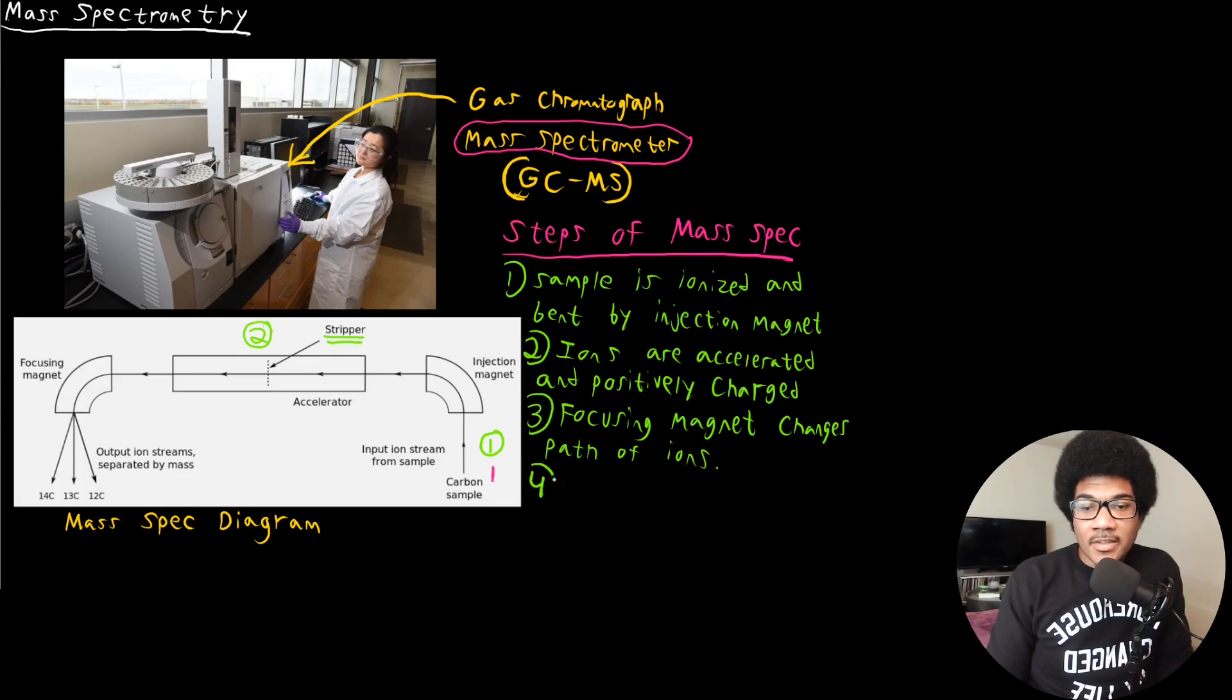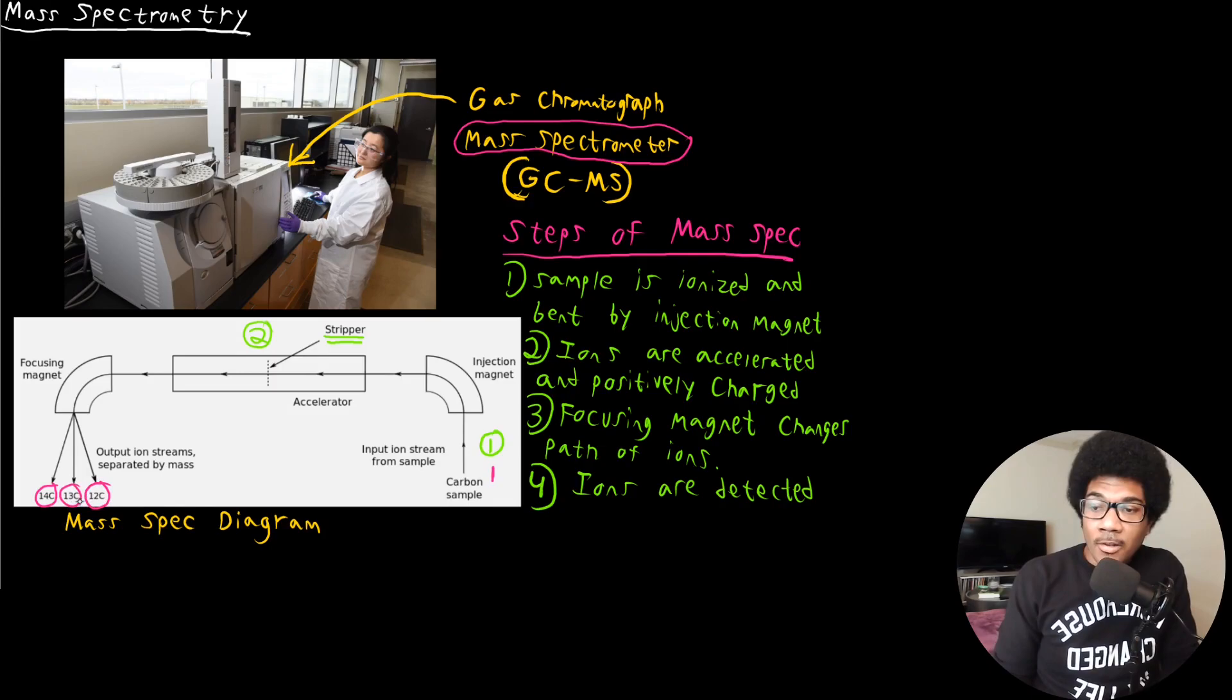And then the last step is that the ions are detected. So last step is the ions are detected. And what you see here is that you see the three different isotopes of carbon. You see carbon 14, you see carbon 13, and you see carbon 12. So we have all of the different carbon isotopes are going to be uniquely identified by the detector.